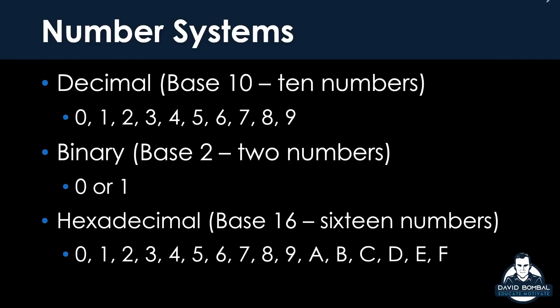Now there are three numbering systems that you as a network engineer need to know. You need to know decimal, binary, and hexadecimal. Decimal is what's called a base 10 numbering system — there are 10 numbers, zero up to nine. I'm pretty sure you're very familiar with this numbering system, so a number like 128 or 255 is an example of a decimal number.